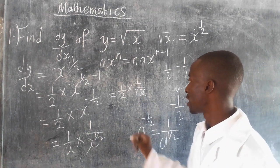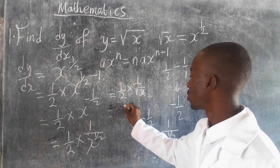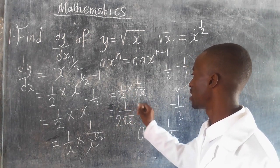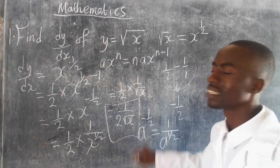So now we have to multiply it. It will be 1 times 1 will give me 1, and 2 times the root of x will give you 2 root x. So this is the answer here.